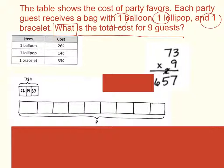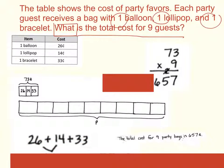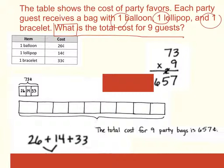So my final product would be 657. Always remember to restate your question and put your answer in it. The total cost for nine party bags is 657 cents.